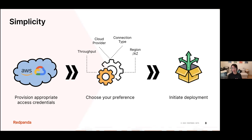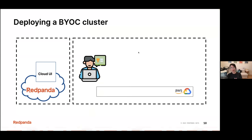We also use placement groups within the same availability zone to ensure nodes are in different physical locations, so if something goes wrong we still maintain availability. Once the customer decides on all these settings, all they need to do is kick off the deployment — and that's it. They'll have a cluster running in their cloud. That's how simple it is, and that's why our customers love BYOC. But to make it that simple, there's a lot of complexity underneath the hood.